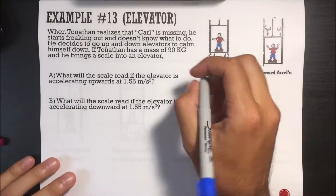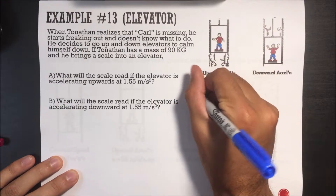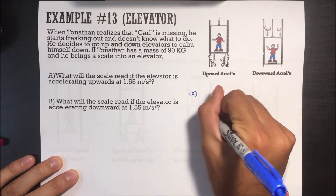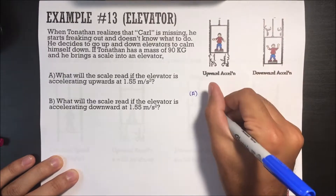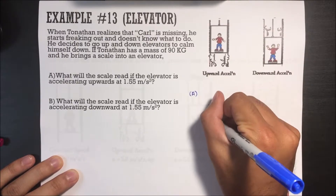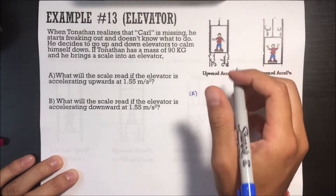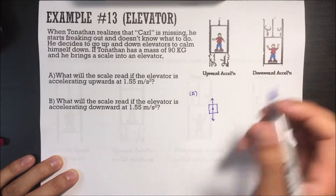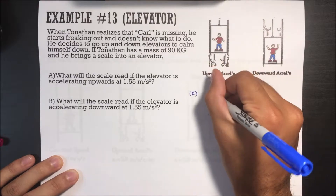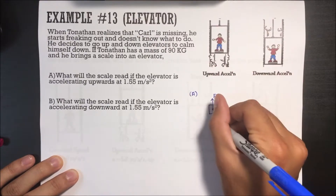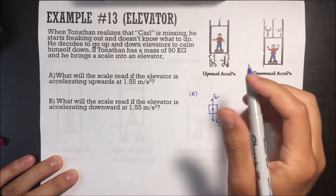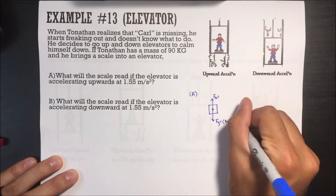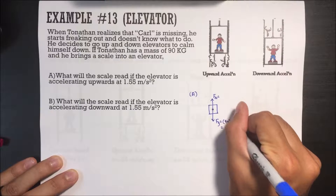A lot of times students have difficulty with these scale elevator problems, but I'm going to try to simplify it as best I can. First, we want to draw a free body diagram. The scale is always going to read whatever the normal force is. The force of gravity is mass times gravity — mass is 90, gravity is 10 — so it's going to be 900 newtons.